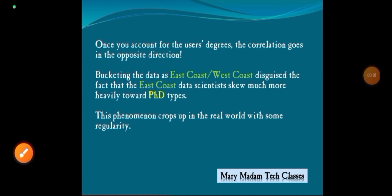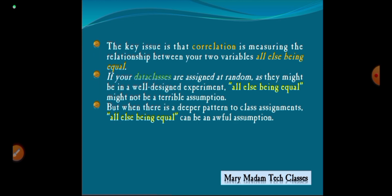Once you account for the users' degrees, the correlation goes in the opposite direction. Bucketing the data as East Coast or West Coast obscures the fact that the East Coast data scientists skew much more heavily toward PhD types. This phenomenon crops up in the real world with some regularity. The key issue is that correlation is measuring the relationship between your two variables, all else being equal.